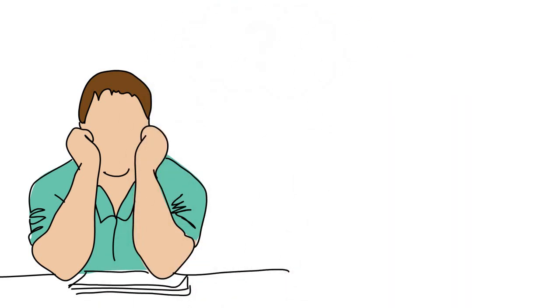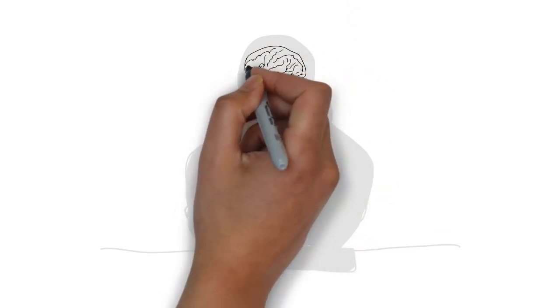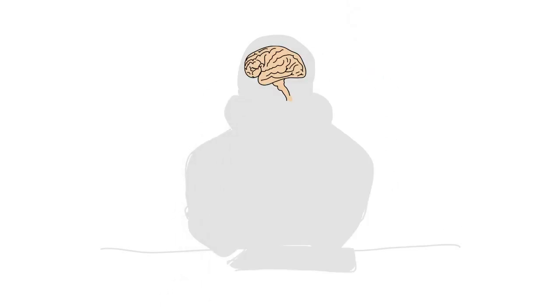Now, just because we may not be consciously aware of the reasons underlying our behavior, doesn't mean that our behavior isn't predictable. On the contrary, research in neuroscience has demonstrated that brain activity is a very dependable predictor of behavior.